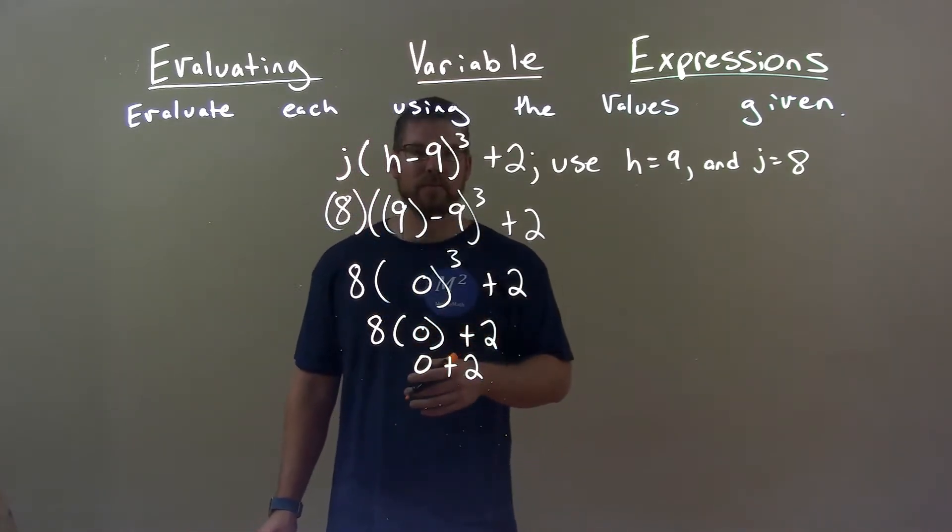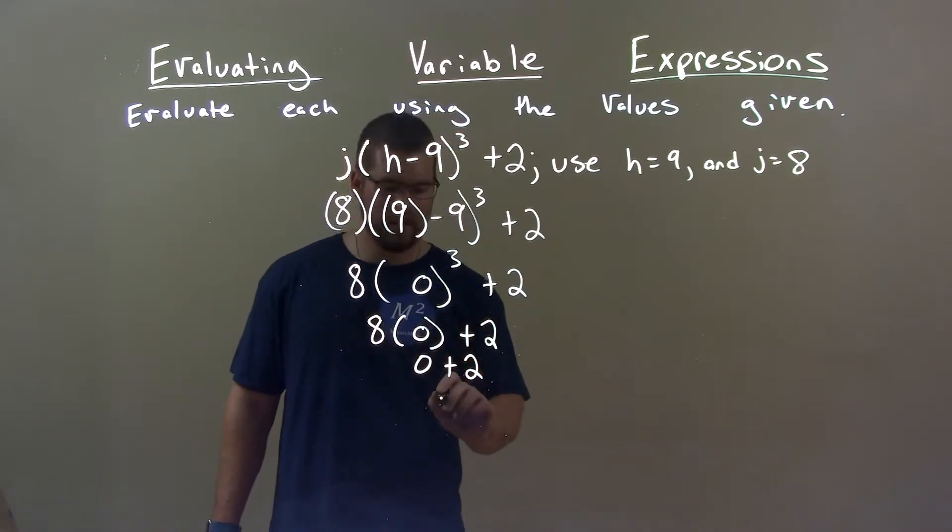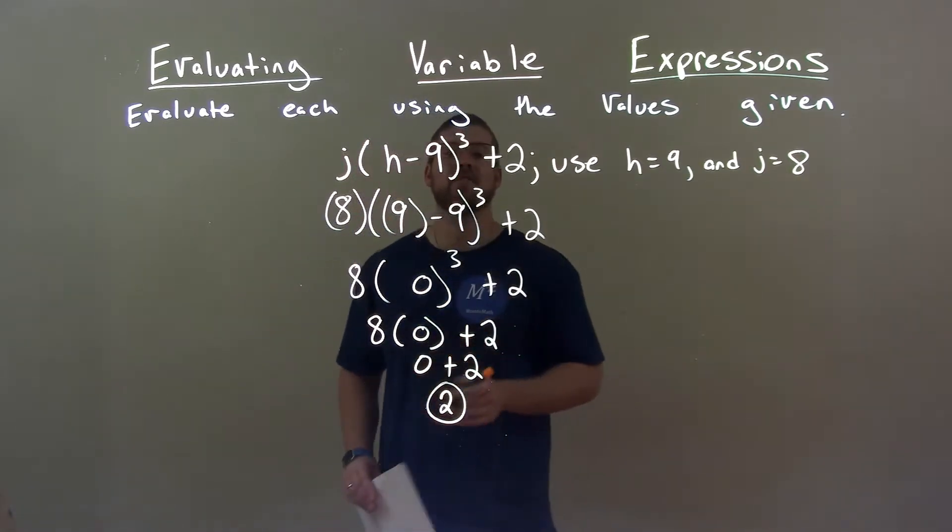We have 0 plus 2, and 0 plus 2 is 2. So our final answer is just 2.